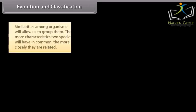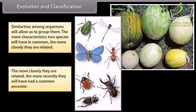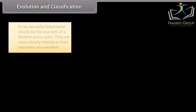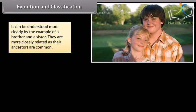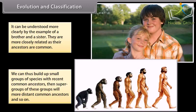Similarities among organisms allow us to group them. The more characteristics two species have in common, the more closely they are related. The more closely they are related, the more recently they will have had a common ancestor. For example, a brother and a sister are more closely related as their ancestors are common. We can build up small groups of species with recent common ancestors, then supergroups with more distant common ancestors, and so on.